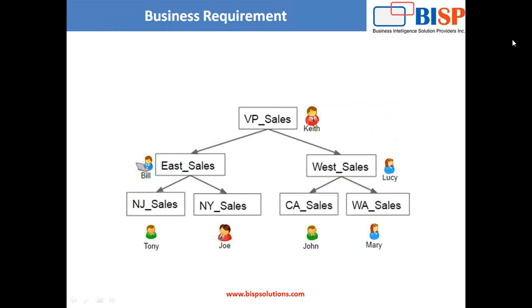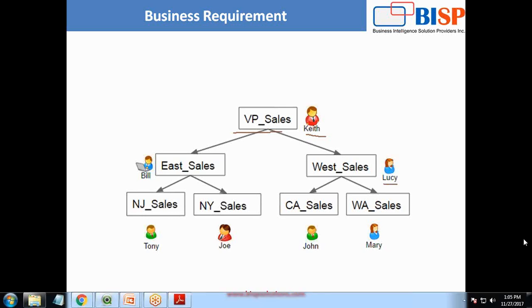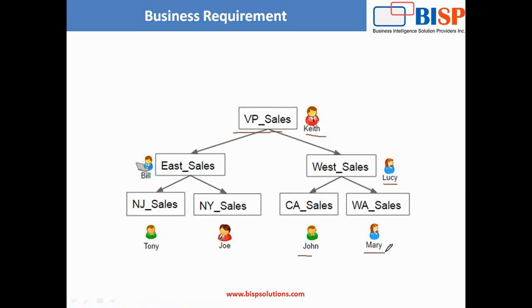So first of all, let me tell you the business requirement. My business requirement is very simple. Let's suppose we have a record hierarchy where Keith is working as VP Sales. Under Keith we have two more roles: East Sales and West Sales. Bill's role is East Sales and the West Sales role has been assigned to Lucy. Under Lucy there are two more subordinates, John and Mary, and under Bill there are two subordinates, Tony and Joy.